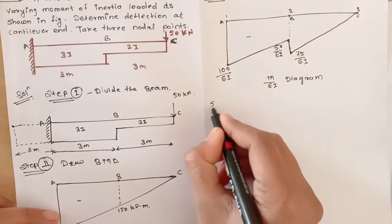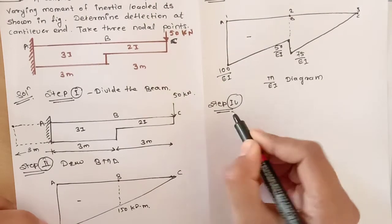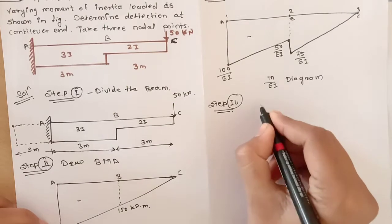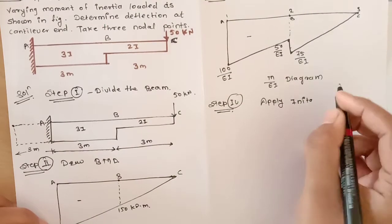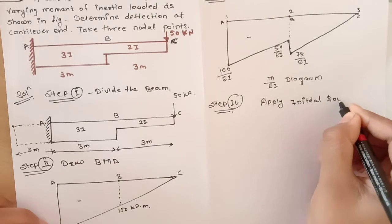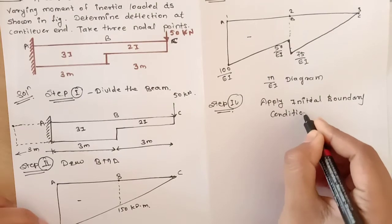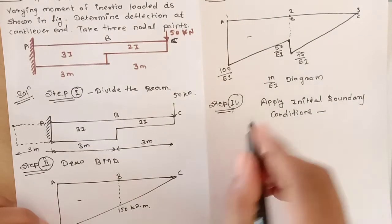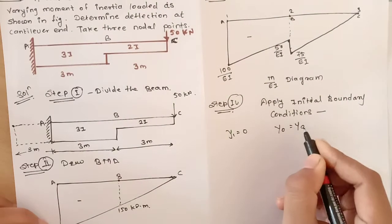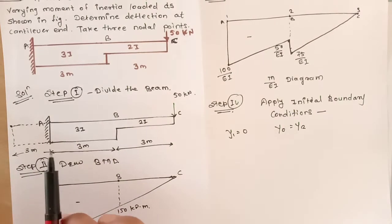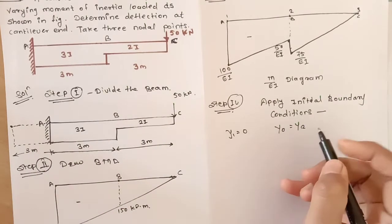Then step number 4: apply the initial boundary conditions. The boundary conditions are Y1 equals 0, and Y0 equals Y2 due to symmetry on both sides of the fixed support at A. So Y1 equals Y2.